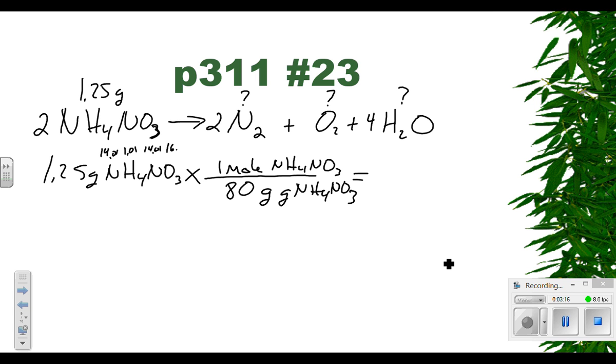All right, so when we do that, we're going to take 1.25. Again, please follow along, do these calculations yourself to make sure that you're getting the same thing, because I might make a mistake. 0.0156 moles of NH4NO3. Running out of room over there.